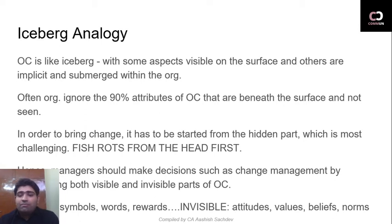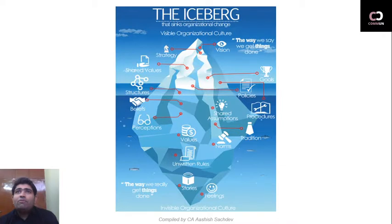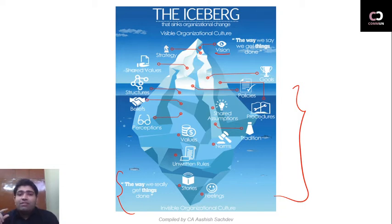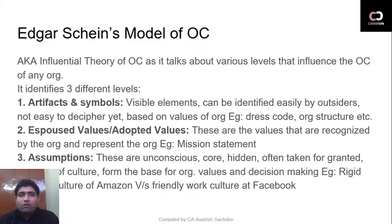We have also studied the Iceberg Analogy in the previous video, where we talked about how we say we get things done versus how we actually get things done. 90% is the invisible part underneath, and the tip of the iceberg is only 10% — that is the visible values, visible vision, strategy, shared values, goals, symbols, sayings, logos — everything visible. So we have understood that model as well.